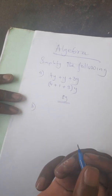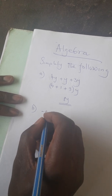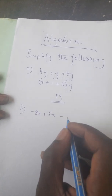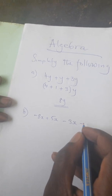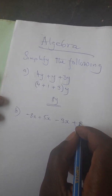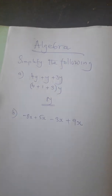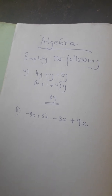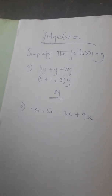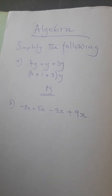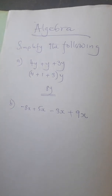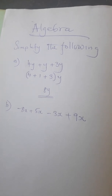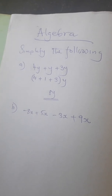Then we go to (b), on the same topic of like terms: negative 8x + 5x − 3x + 9x. It's the same thing — we need to work with the coefficients. This letter, which we call a variable, really has no influence on our answer; it will just be part of the final answer. We are dealing with the coefficients — these numbers before a letter are what we call a coefficient.